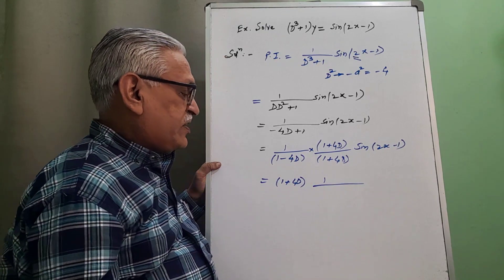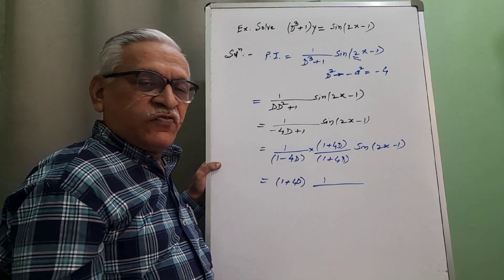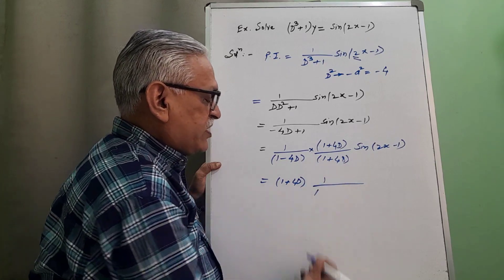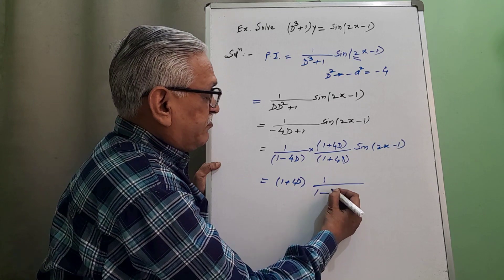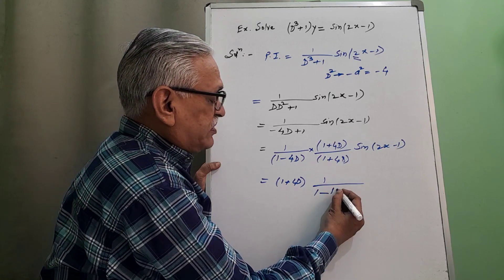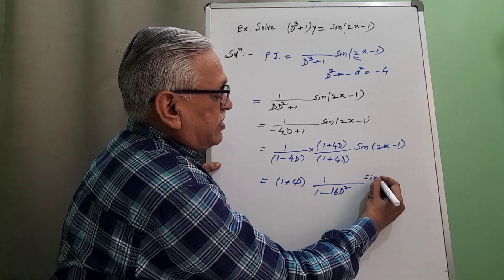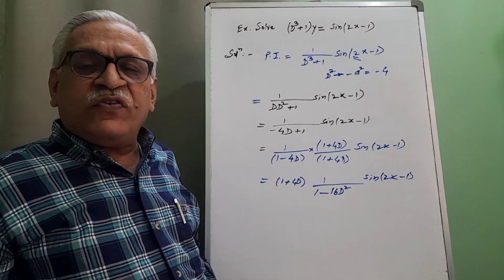1 upon a plus b, a minus b, its product is a square minus b square. Standard result. And therefore we get a square as 1 minus b square, 4 square is 16 d square, which we have to operate on sin of 2x minus 1.